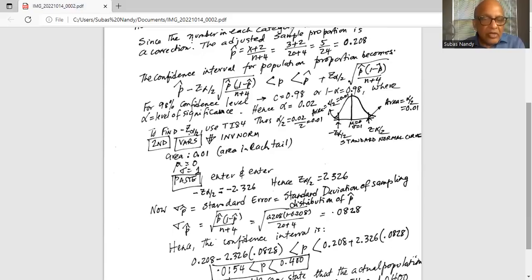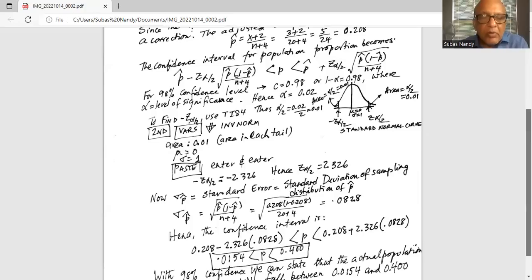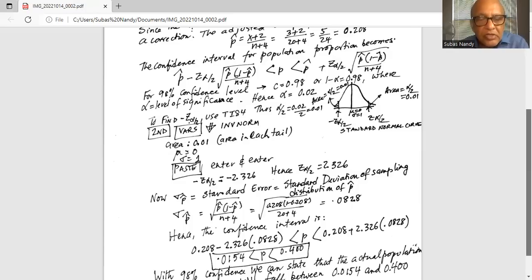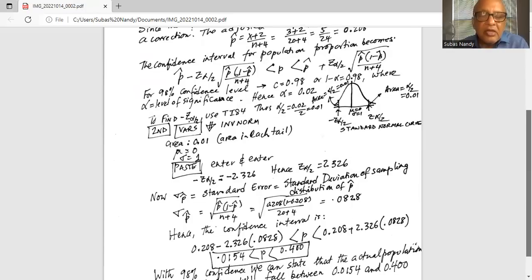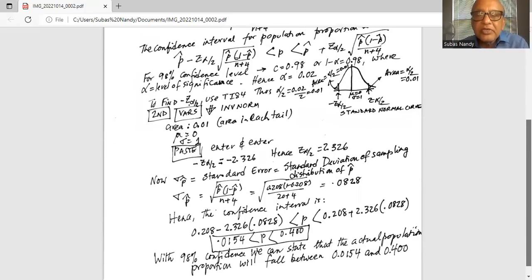What are the two boundaries of the confidence interval? The lower boundary is p-hat, which is 0.208, minus the critical value of z, which is 2.326, times the standard error, which is 0.0828. And the upper bound is 0.208 plus 2.326 times 0.0828.